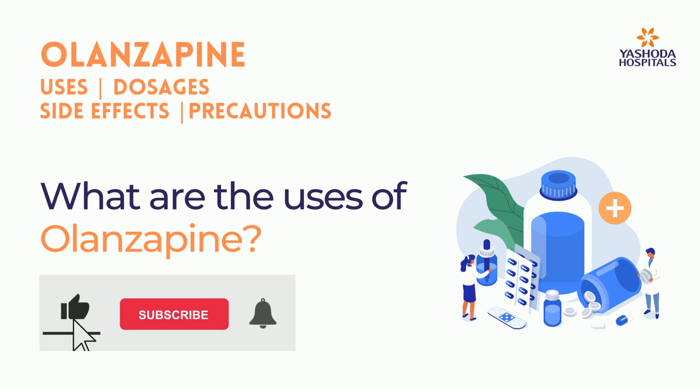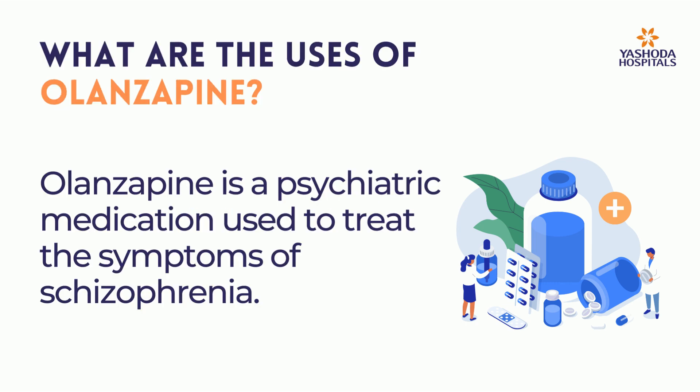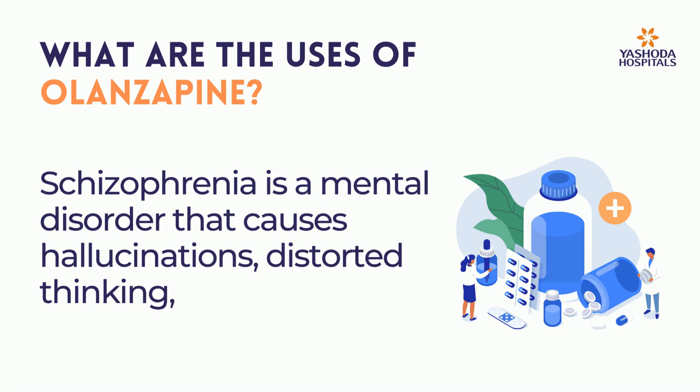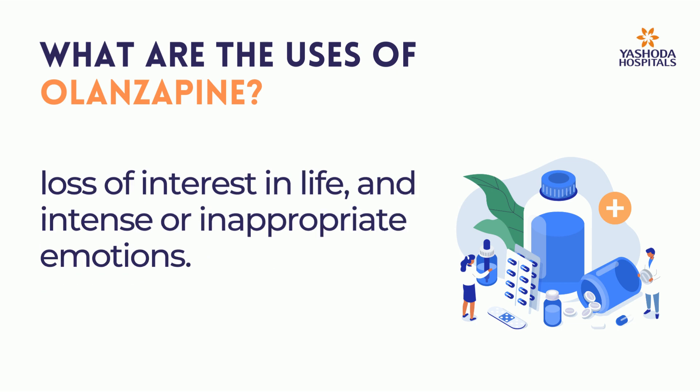What are the uses of Olanzapine? Olanzapine is a psychiatric medication used to treat the symptoms of schizophrenia. Schizophrenia is a mental disorder that causes hallucinations, distorted thinking, loss of interest in life, and intense or inappropriate emotions.